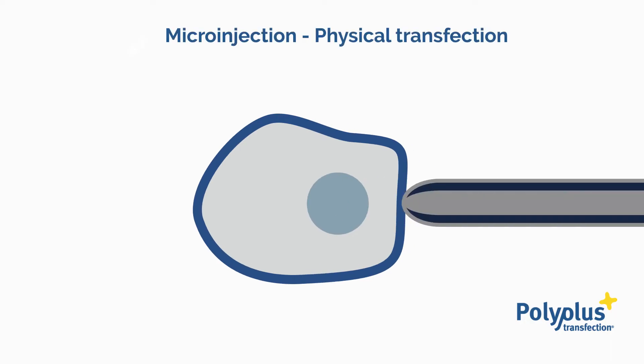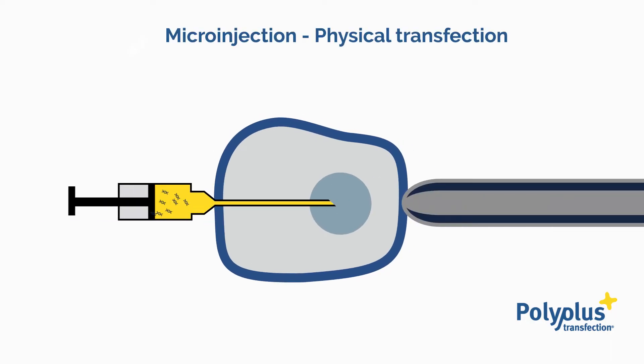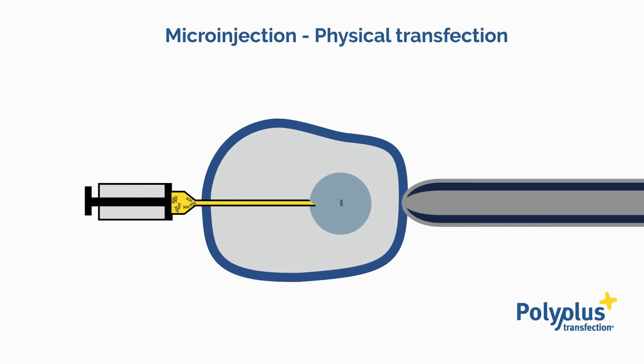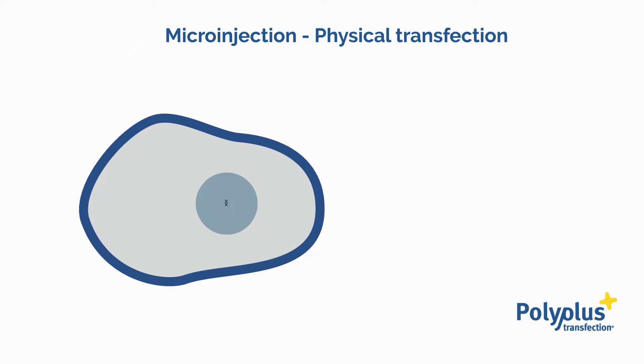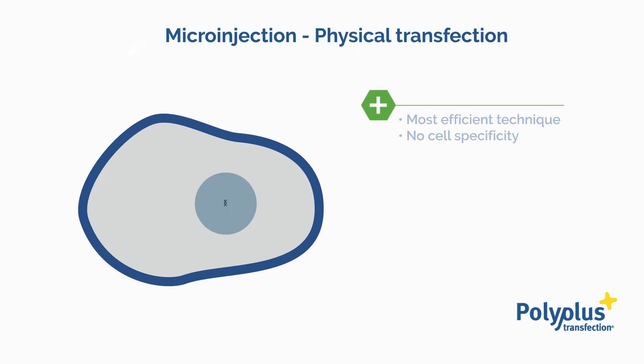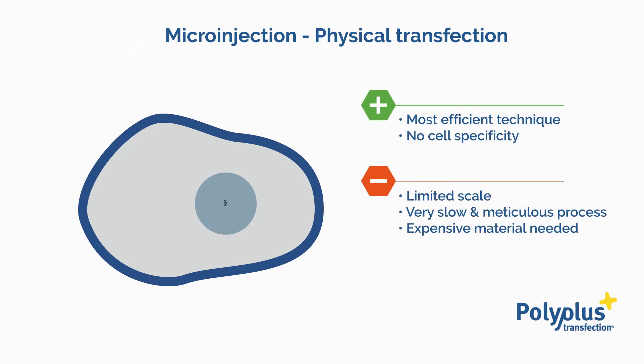Micro-injection allows penetration of the cell membrane and nuclear envelope with a glass micropipette. This technique requires extreme precision and high levels of training.